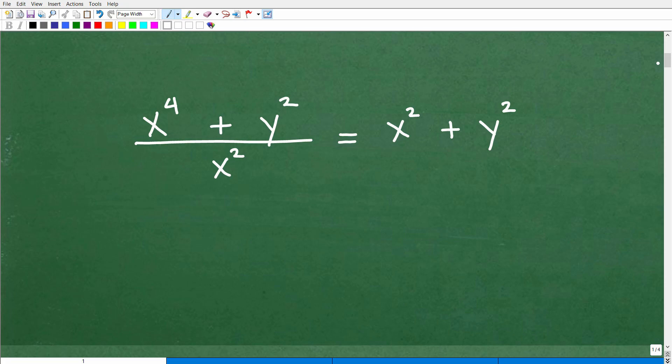Okay, so let me go ahead and show you this expression. We have x to the fourth plus y squared over x squared.